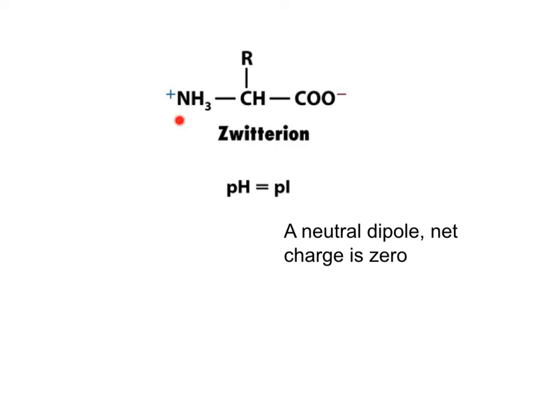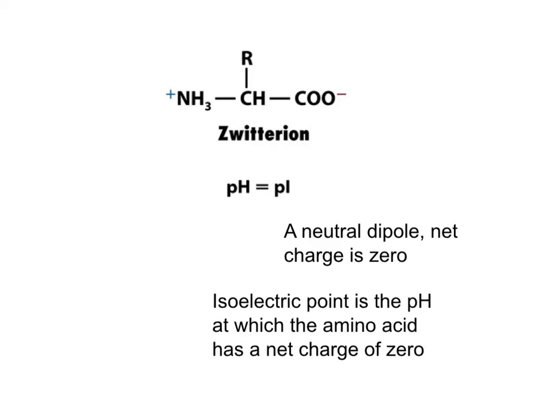These two ends are polar ends; therefore amino acids will be soluble in water. The net charge of an amino acid will depend on the pH of the environment in which that amino acid is found.